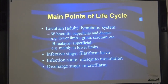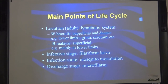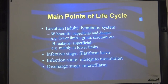The location of the adult worm is the lymphatic system. W. bancrofti is found in superficial and deeper lymphatics and occurs in the lower limbs, groin, scrotum, etc. Brugia malayi localizes in superficial lymphatics, mainly in the lower limbs. The infective stage larva is known as the filariform larva. The infection route is the mosquito, which deposits the larvae on the skin — it does not actually inoculate into the skin, but deposits them on the surface, and the larvae then penetrate.